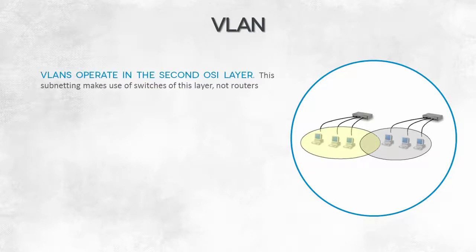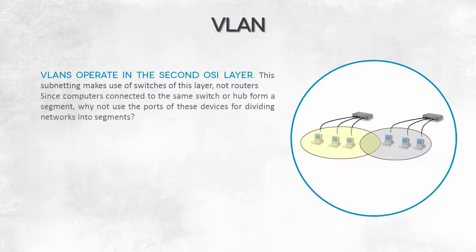In addition to the subnetting that takes place in the network layer of the OSI model, you can also come across data link layer routing and switches that perform functions of routers. When you use two switches that are not connected to each other, as in the picture at the top of the slide, each of them creates a subnet.